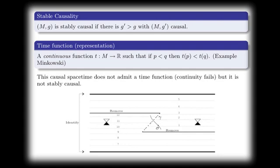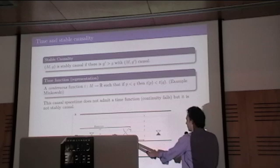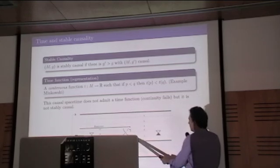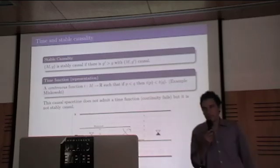Now, for example, this one is an example of space-time obtained from Minkowski identifying two lines, removing these half lines here. So this space-time here is causal because you cannot cross these light geodesics and go back. But it's not stably causal, because if you enlarge the cones here, if you open the cones, you can cross and connect again to your starting point. Here it seems that we have a time function, but this is not a time function. These are the slices of a function. This is not a time function because it's not continuous here. Here it can cross from 1 to 11, so it's not continuous.